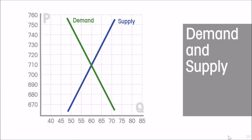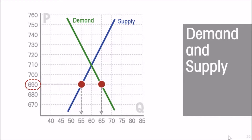Suppose we pick a price arbitrarily. We notice that the price in the market is six hundred and ninety dollars a pound on one particular Saturday. The information embodied in the demand and supply curves implies that at that price, vendors are bringing only fifty-five pounds of carrots to market, whereas buyers are showing up wanting to buy sixty-five pounds of carrots.